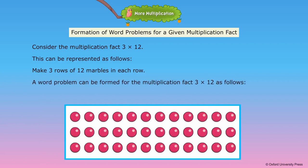Three multiplied by twelve as follows: There are twelve marbles in each row. How many marbles will be there in three such rows?